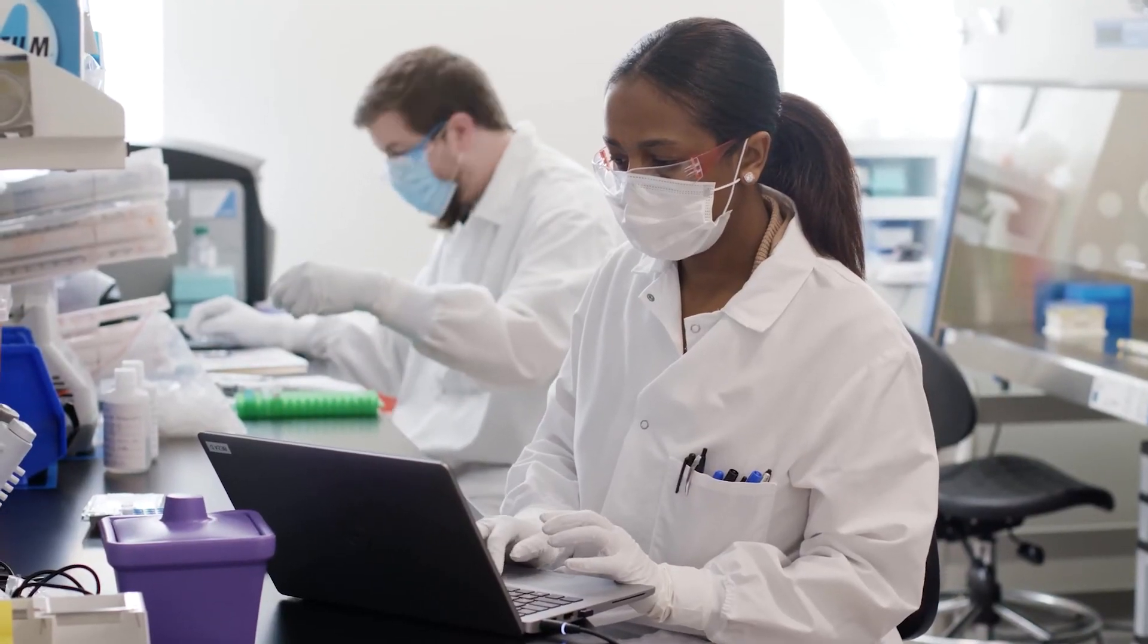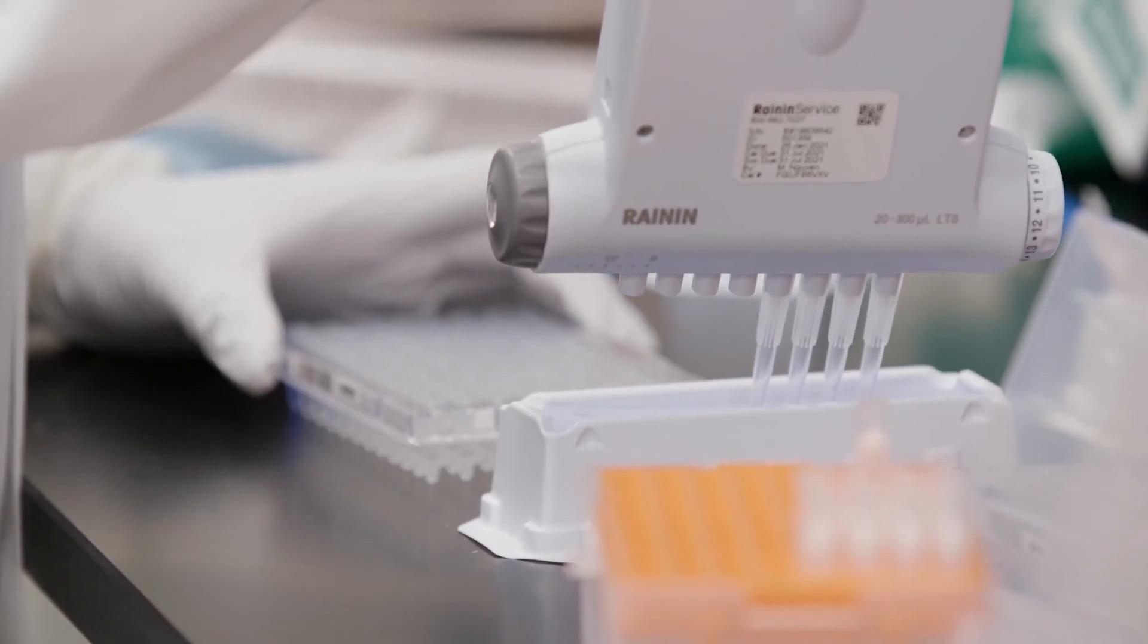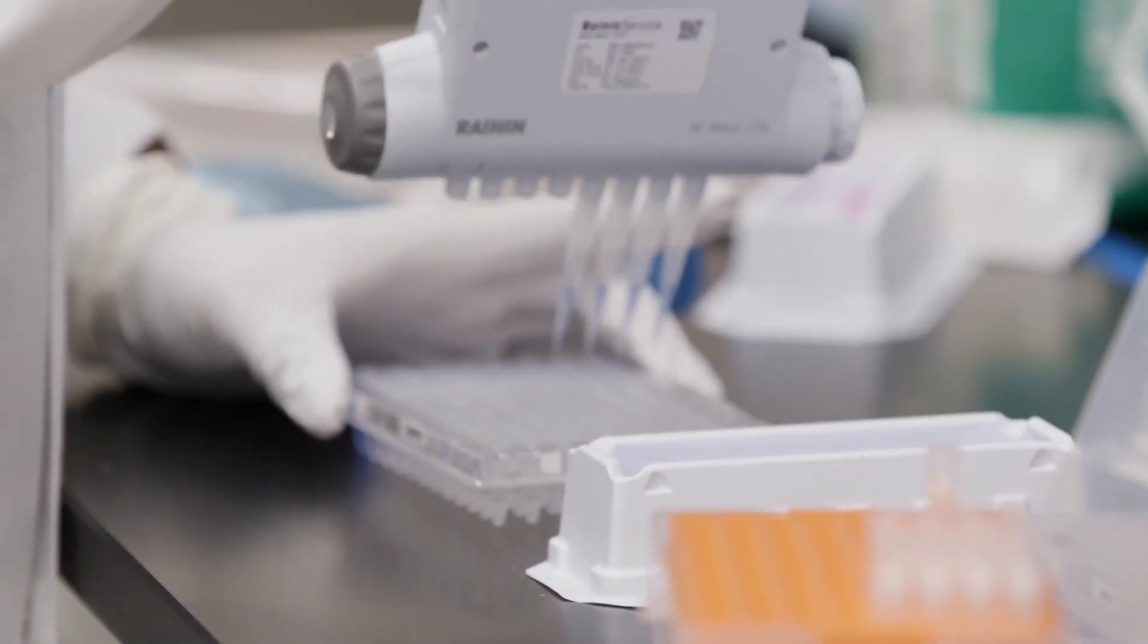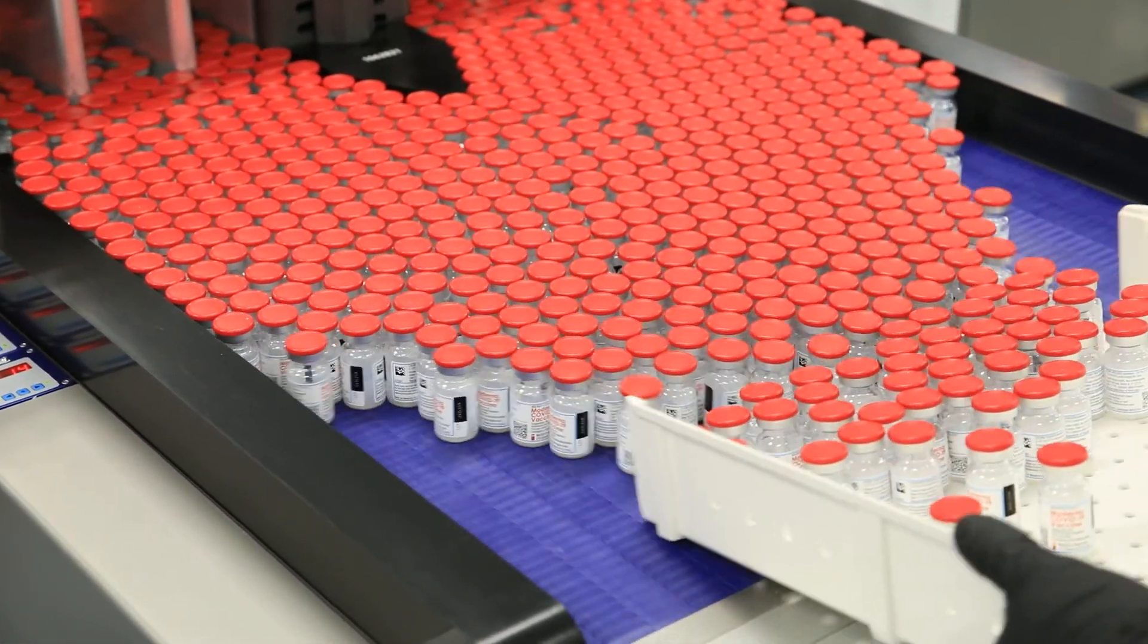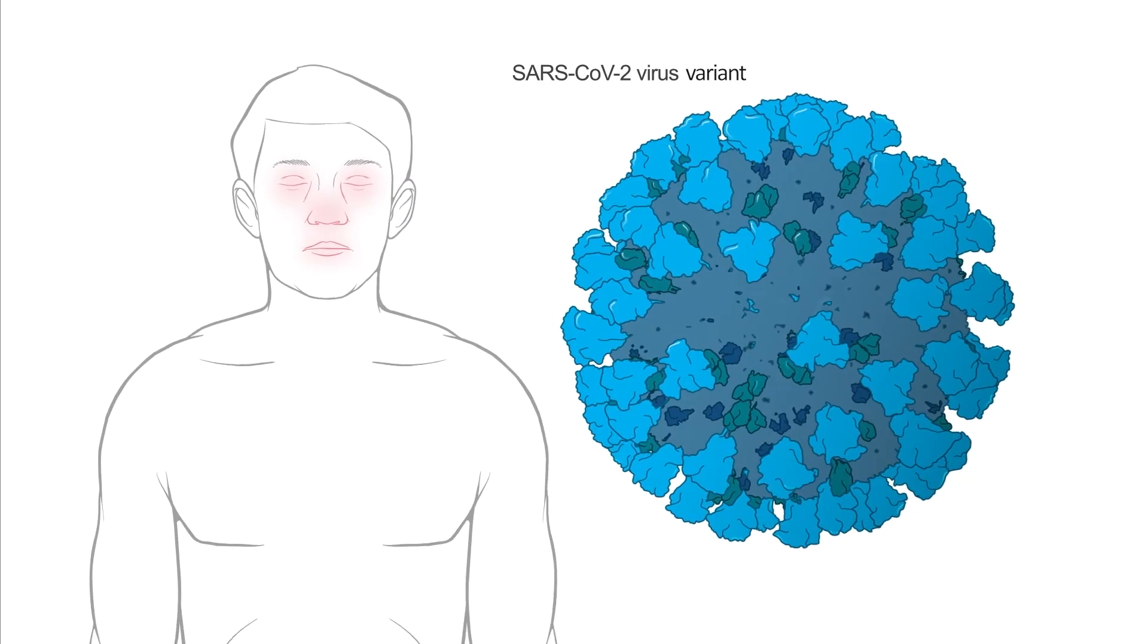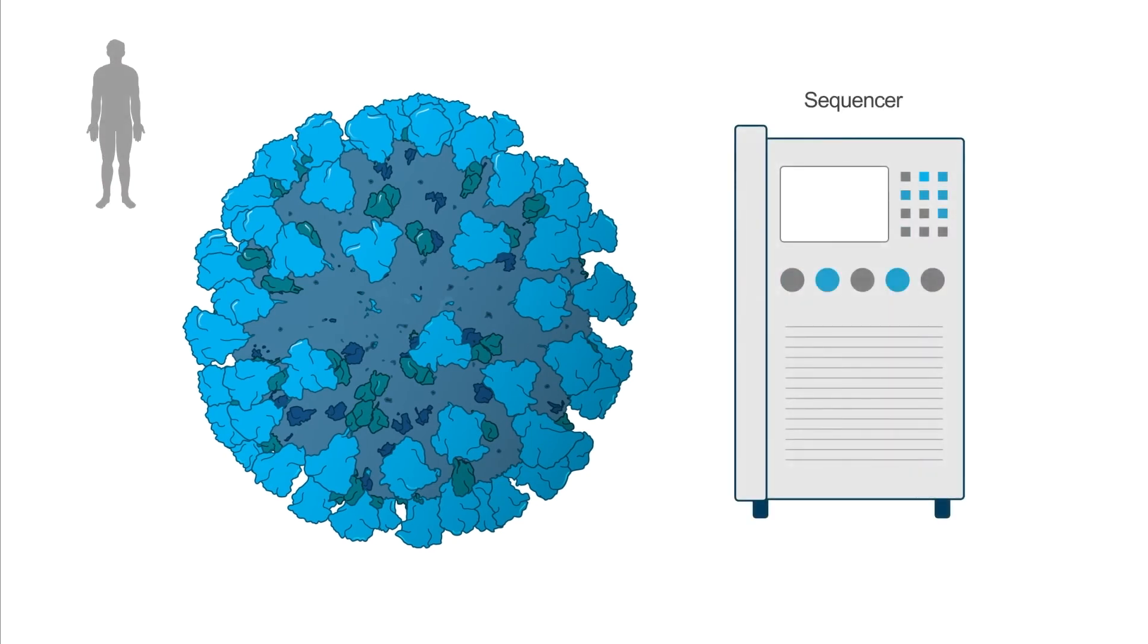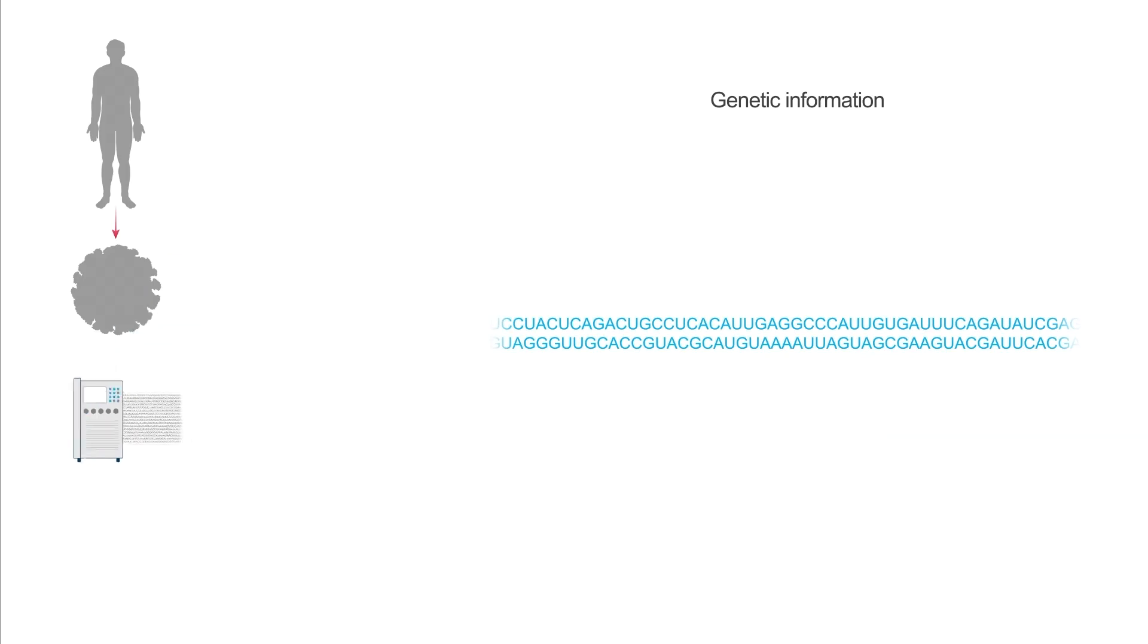Moderna is undertaking an exercise to investigate what happens if we swap out the sequence for the original Wuhan strain. Our idea is that SARS-CoV-2 vaccines could become like influenza vaccines, where good epidemiology is tracking what's happening in real time. And then we're able to put the relevant sequence into the vaccine before people would need it. And those studies are actually underway now, both in a priming series and in a booster dose for people that have already received primary vaccination.